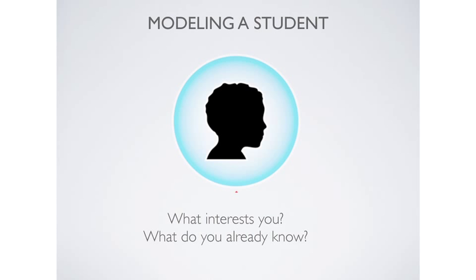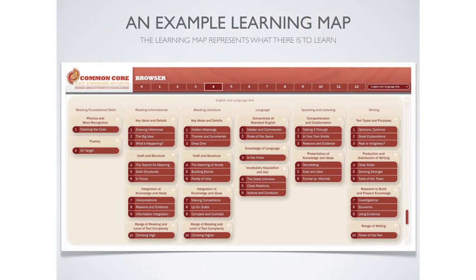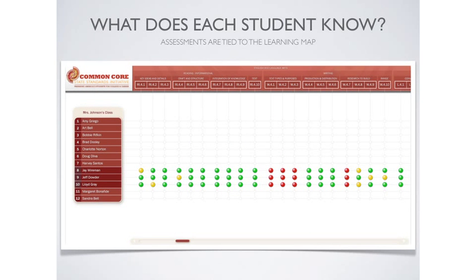In order to know what you've actually learned, you need a representation not just of what you've learned but of the student. There are clearly two things about a student that are relevant: one is what interests them, and the other is what they actually know — what competencies, what skills, what particular knowledge they already have. The 'what do they know' part is maybe easier when you have the learning map, because the map is a map of what they're intended to learn, so it's fairly straightforward to map students against it.